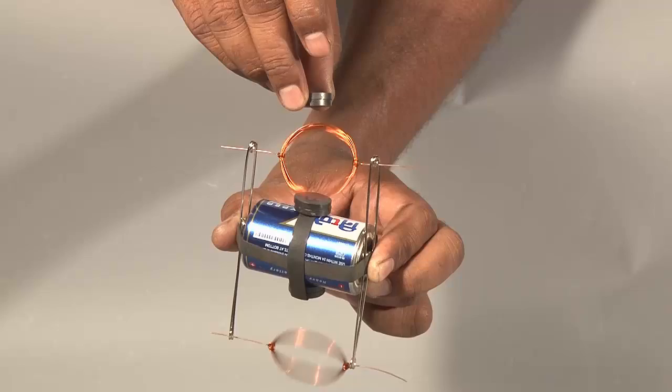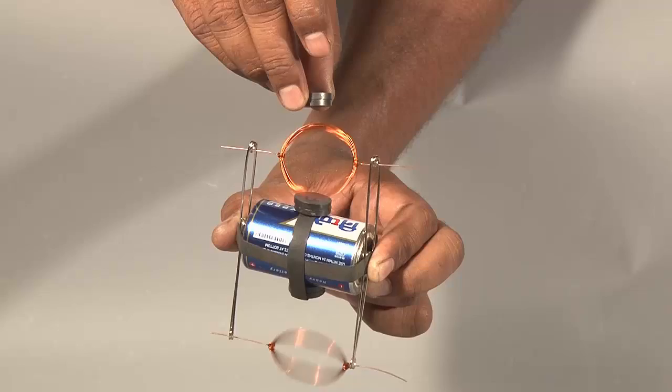The speed of this motor mainly depends on three important factors: the current passing through the coil, number of turns in the coil, and the strength of the magnet.